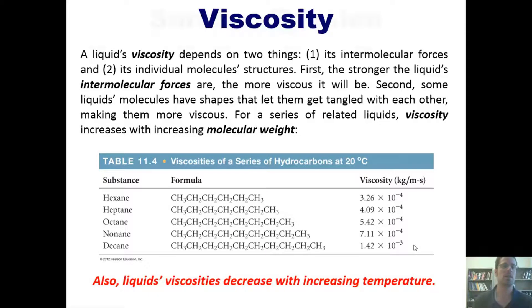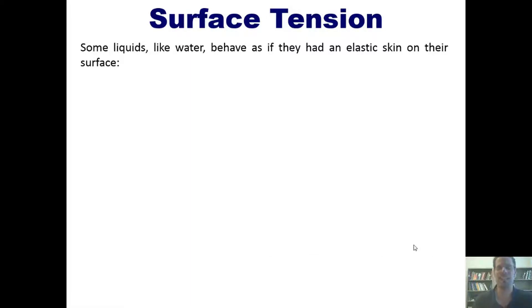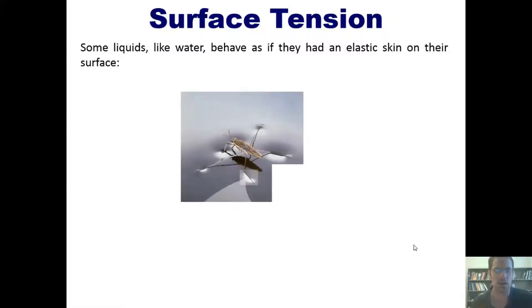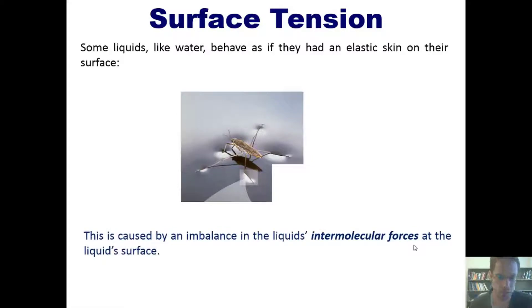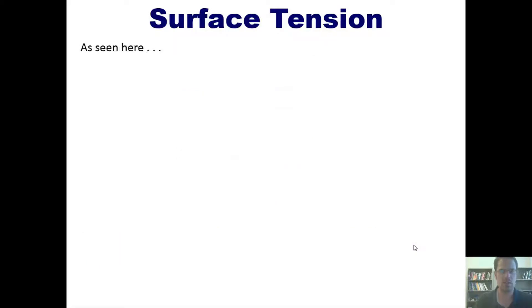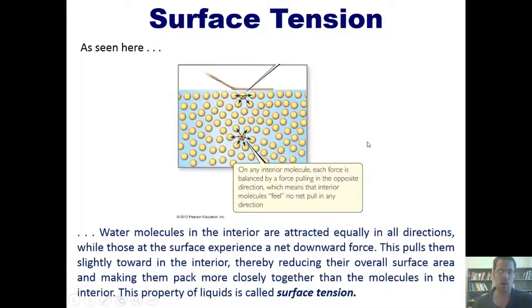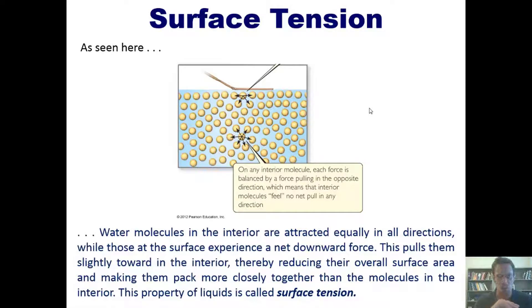Some liquids, such as water, behave as if they had an elastic skin on their surface — you can see that in this picture of a water skeeter gliding across the surface of a pond. This tension along the surface of a liquid is caused by an imbalance in the liquid's intermolecular forces right at that surface. Water molecules on the interior are attracted equally in all directions, while molecules at the surface only experience an intermolecular attraction pulling them downward. That net downward force pulls them slightly toward the interior, reducing the overall surface area and making them pack more tightly together right at the surface.